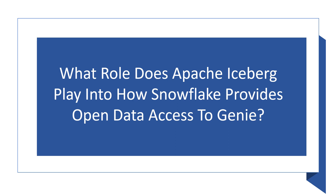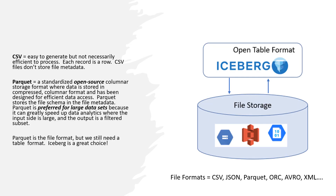So what role does Apache Iceberg play in how Snowflake provides open data access to Genie? To answer this question, we really need to understand how data is stored so we can better understand how open data access becomes a reality. There are many different ways that data can be stored in the cloud. For large data sets, Parquet is preferred because it can greatly speed up data analytics. One of its other benefits is that Parquet is an open source format and an excellent file format choice for storing large amounts of data in the cloud. But to use Parquet file storage, we still need a table format — and for that, Iceberg is a great choice.